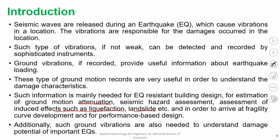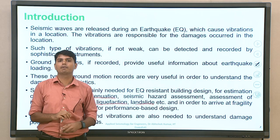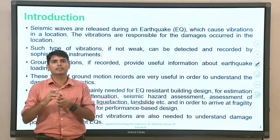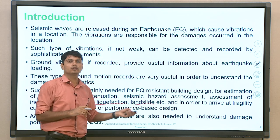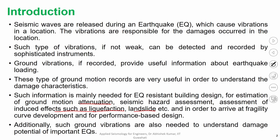Similarly, in order to find out damage characteristics one can go with fragility analysis — taking into account potential ground motions and correlating with damage characteristics to develop fragility curves for a particular structure or site of interest. For performance-based design also, you need a larger set of ground motions to find out how the system is going to respond to a larger set of potential ground motions expected at a particular site.